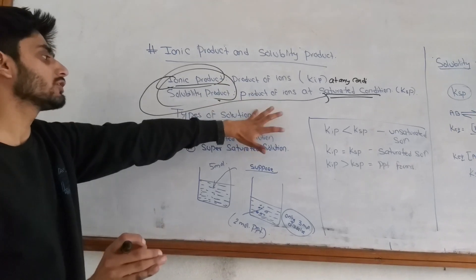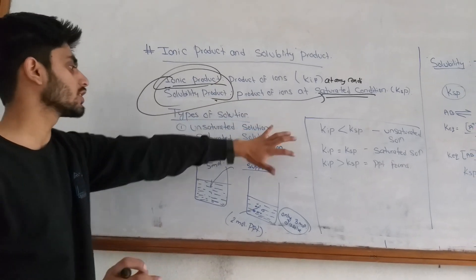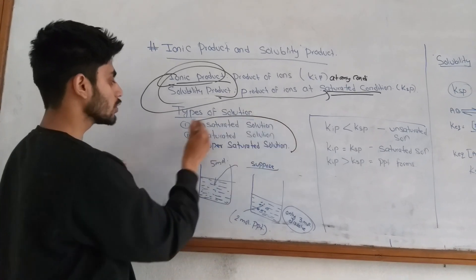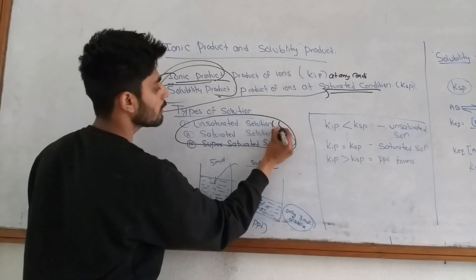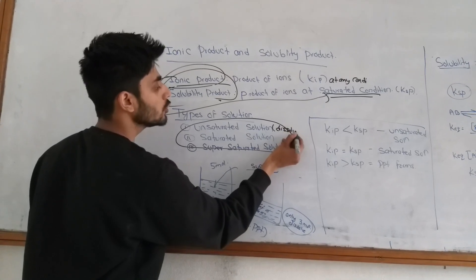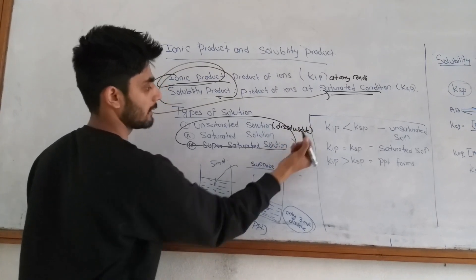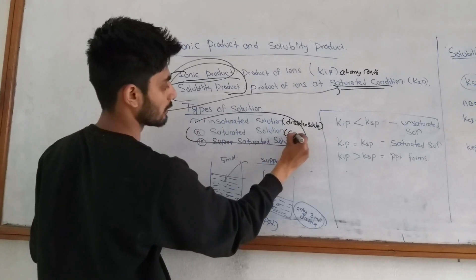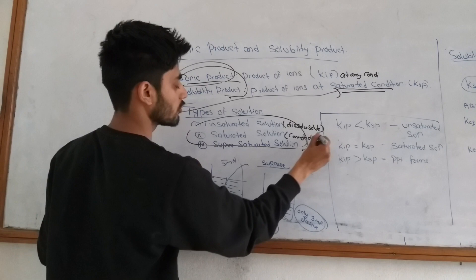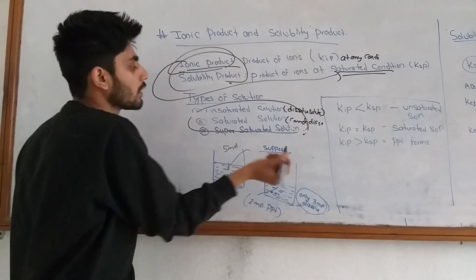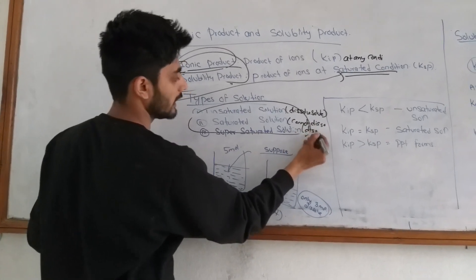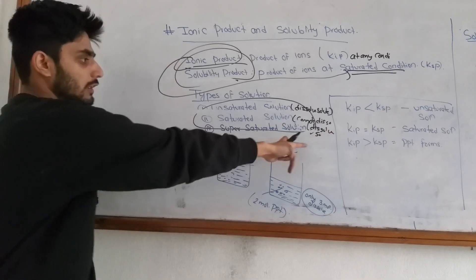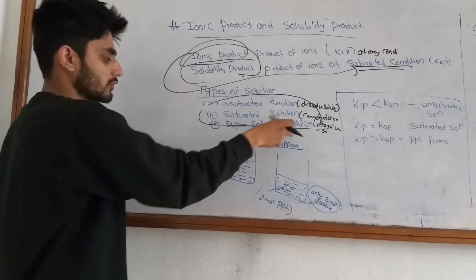So what types of solution are there? There are three types of solutions: unsaturated solution, saturated solution, and supersaturated solution. Unsaturated solution is a solution that can still dissolve more solute. If you add more solute, it will dissolve. Saturated solution cannot dissolve any more solute.